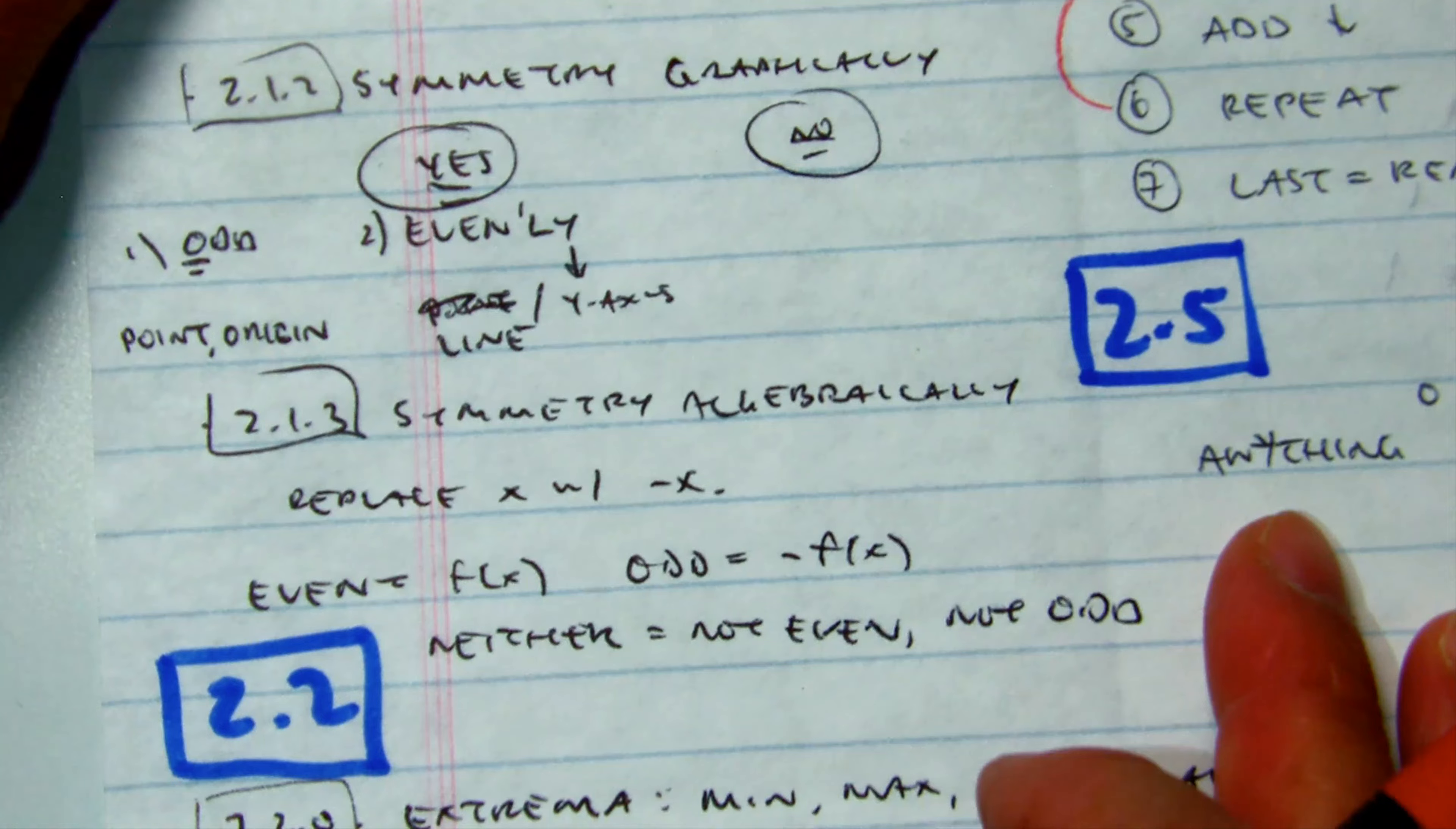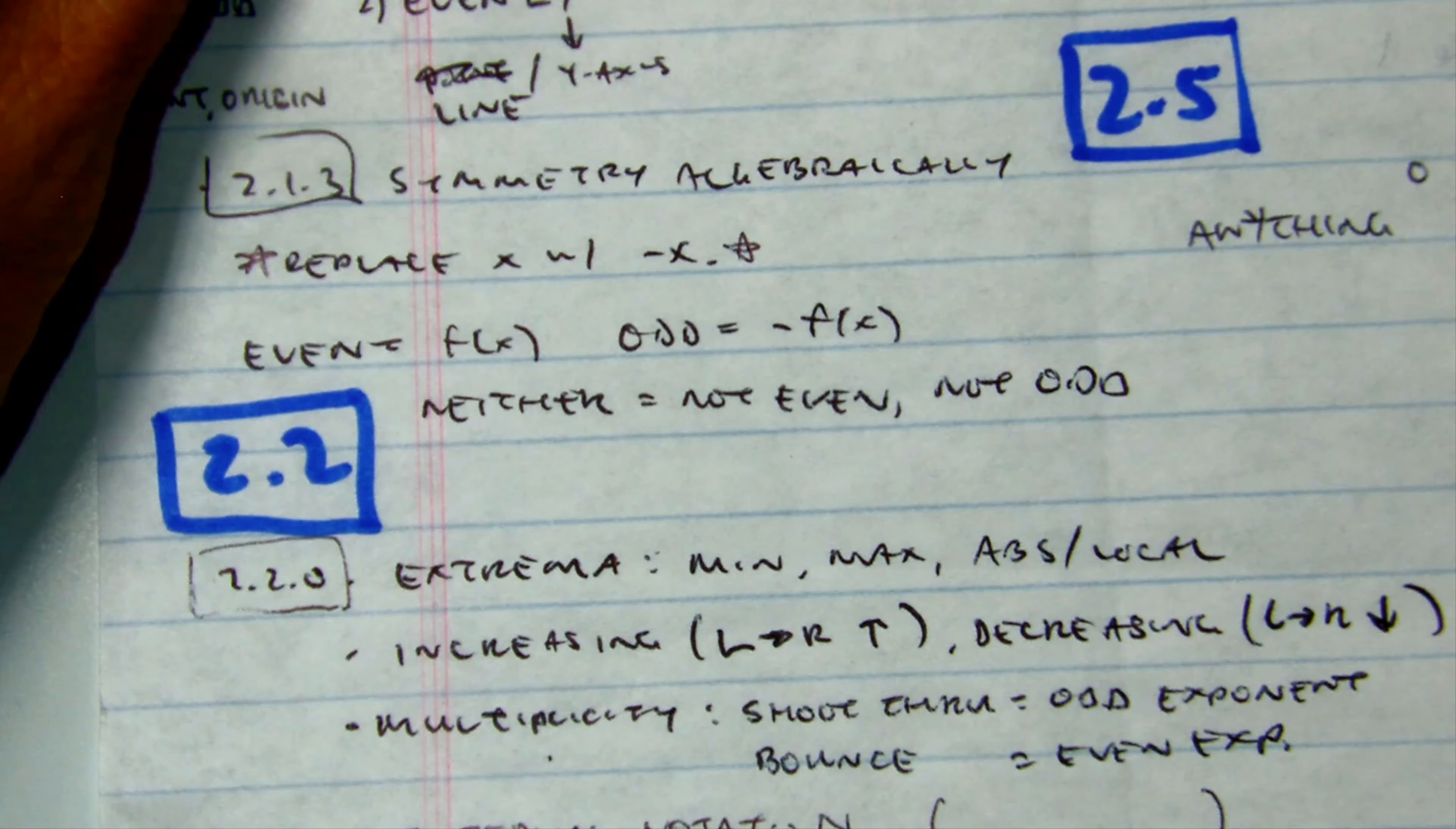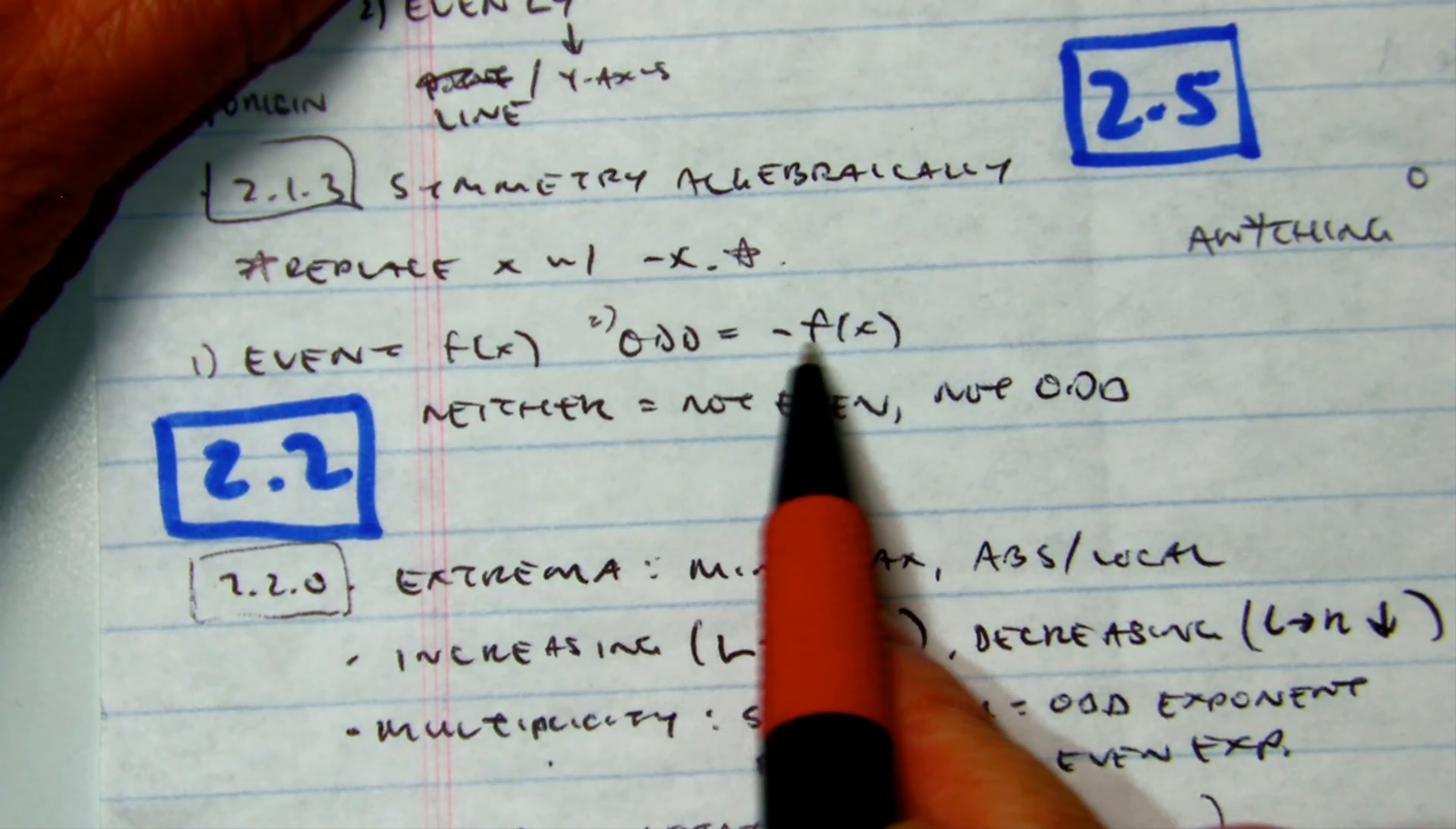2.1.3, we talked about how do you find out symmetry algebraically? Well, the first thing is we talked about the star to replace the x value with negative x. So what this does is it will test it. Then there's three scenarios. It could be even if it's equal to the original. It could be odd symmetry if it's opposite of the original. So factor out the negative one.